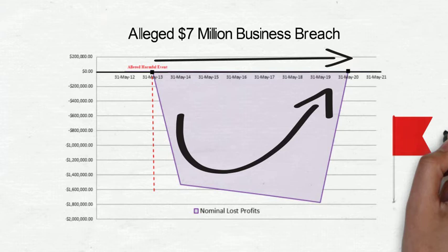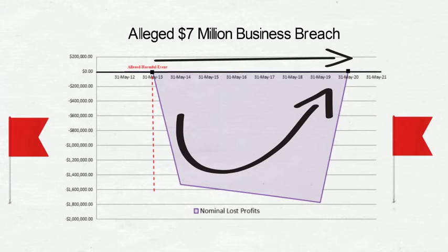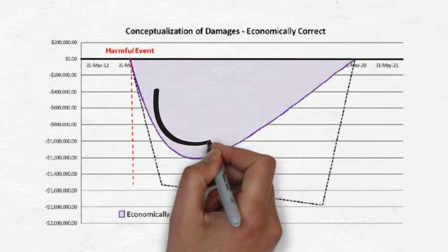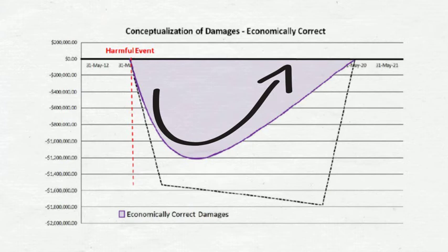Red flags should be popping out everywhere. In damages, this polygon box is conceptually flawed because the damaged party must minimize their damages. As we can see, after the alleged harmful event, businesses must make decisions and develop strategies to decrease their damages. This minimization of damages is shown with the curved line.